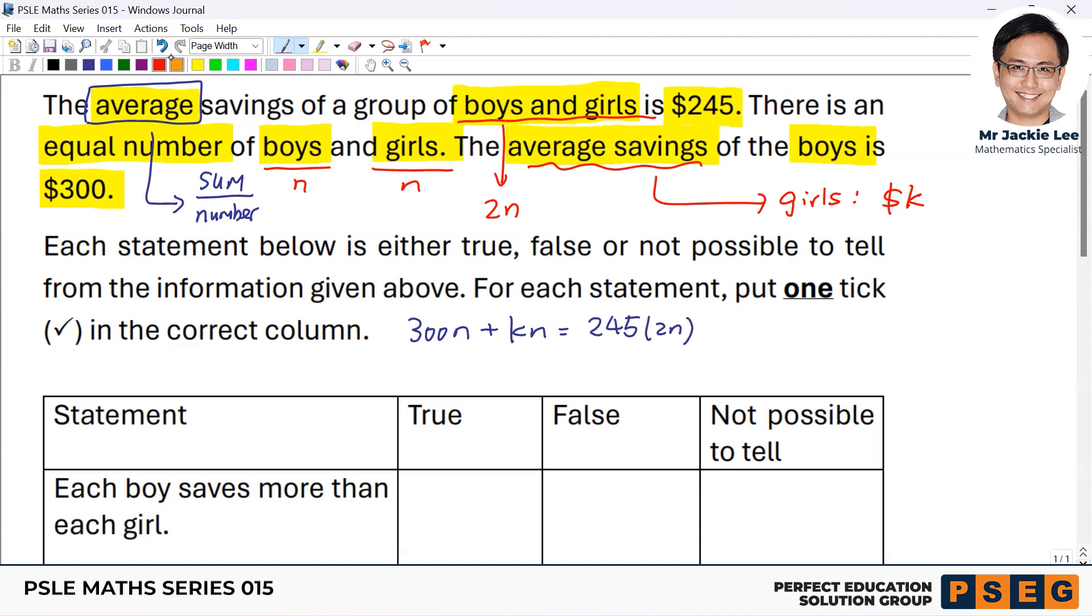Now to continue, we can cancel the n. Now because every terms carry the n, we can cancel like both sides divided by n. So this will end up 300 plus k equals to 490. In fact, the average for the girls will become 190. Am I right? 190.